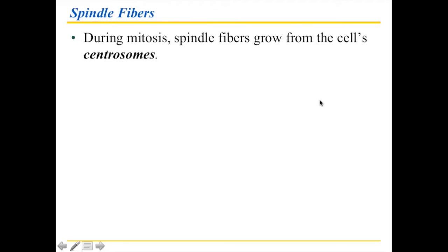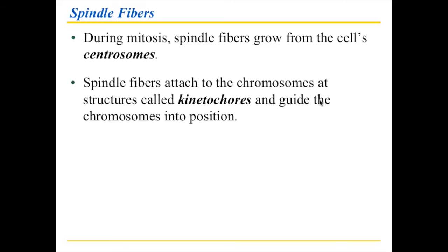In order for anything to pull something apart, we need the things that do the pulling. In our cells, those are called spindle fibers. These spindle fibers need to be produced, and that's what those yellow structures called centrosomes were doing. Once you have these spindle fibers produced, they then attach to the chromosomes at particular structures called kinetochores.